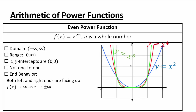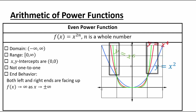Let's recall even power functions: x squared, x to the 4th, in general x to the 2n where n is a whole number. We have this U-shape. x squared is the parabola going through (0,0). x to the 4th is a similar shape, except between 0 and 1 the points raised to the 4th power are lower than x squared, but for values bigger than 1 or smaller than negative 1, x to the 4th is higher than x squared, similarly with x to the 6th. The domain is negative infinity to infinity, range is 0 to infinity, x and y intercepts are (0,0), and it's not a one-to-one function.